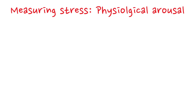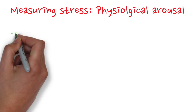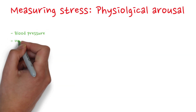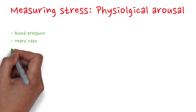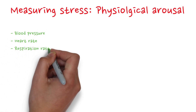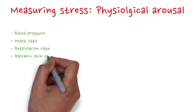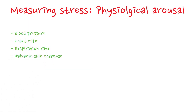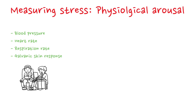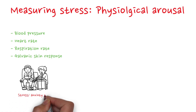One way to measure it is using blood pressure, heart rate, respiration rate, or galvanic skin response. They can all be measured separately, or you can use polygraphs to measure it in one go. Most of you probably know polygraphs as a lie detector — what a lie detector actually measures is the stress or anxiety you feel when you lie.